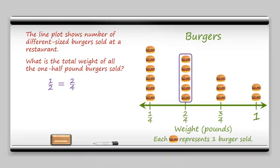OK. So if I have 5 burgers that each weigh 1 1/2 pound, that means I can add 1/2 five times. Or now that we're big boys and girls, we know we can multiply 5 times 1/2, which gives us 5 halves, which is the same as 2 and 1/2. So the total weight of all the 1/2 pound burgers is 2 and 1/2 pounds.